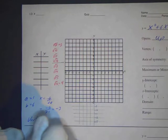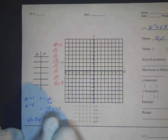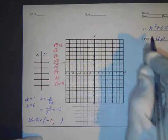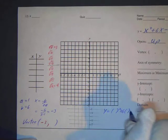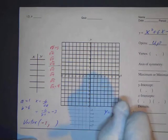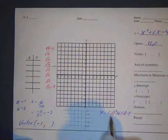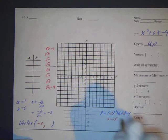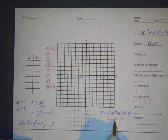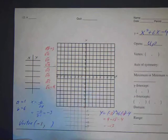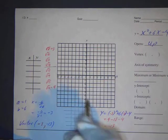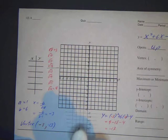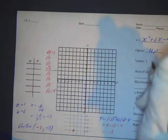So the x-value of the vertex is negative 3. To find the y-value, I substitute negative 3 back into the function: y equals x squared plus 6x minus 4. Plugging in negative 3 gives us 9 minus 18 minus 4. That's negative 9 minus 4, which equals negative 13. So the y-value of the vertex is negative 13, which is why we need the extended grid.